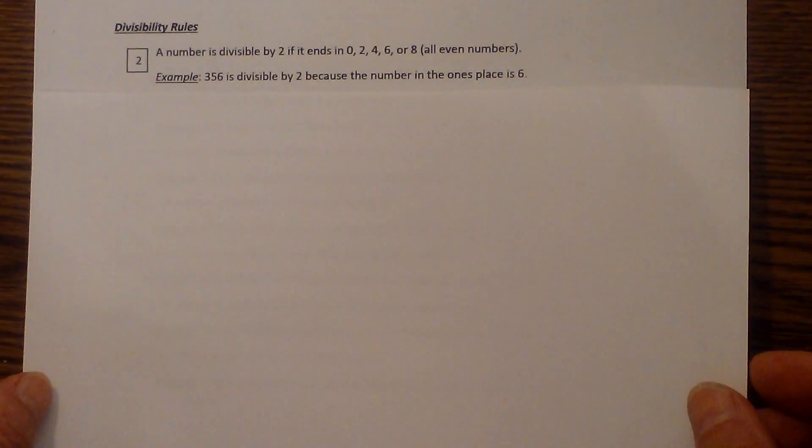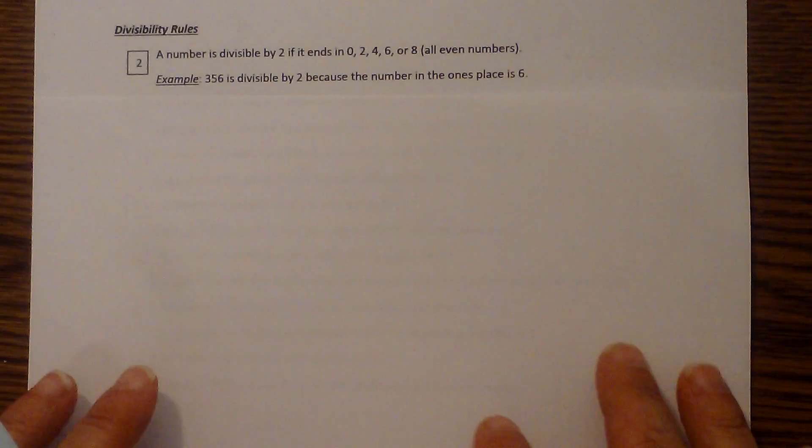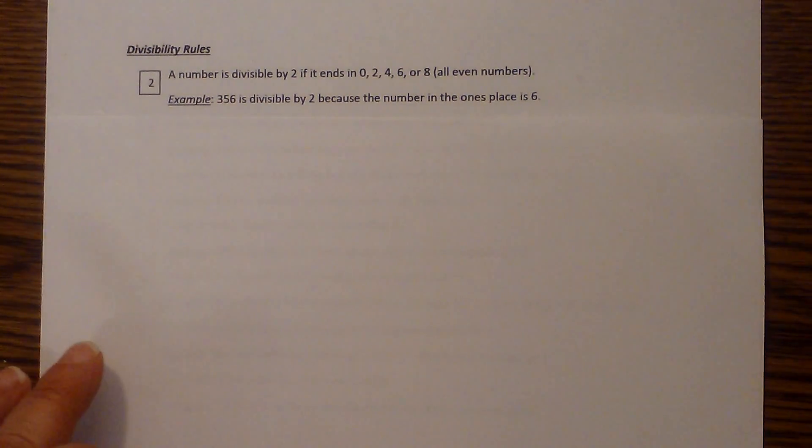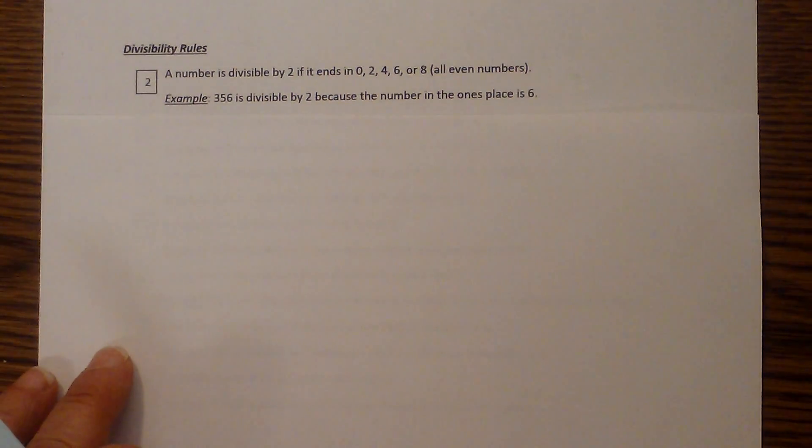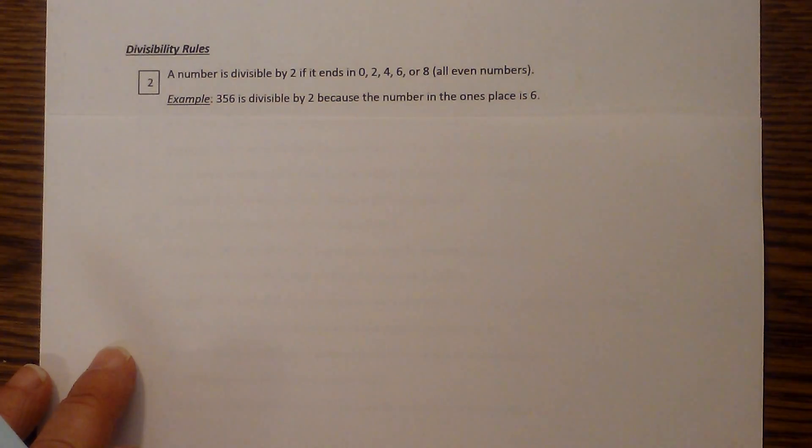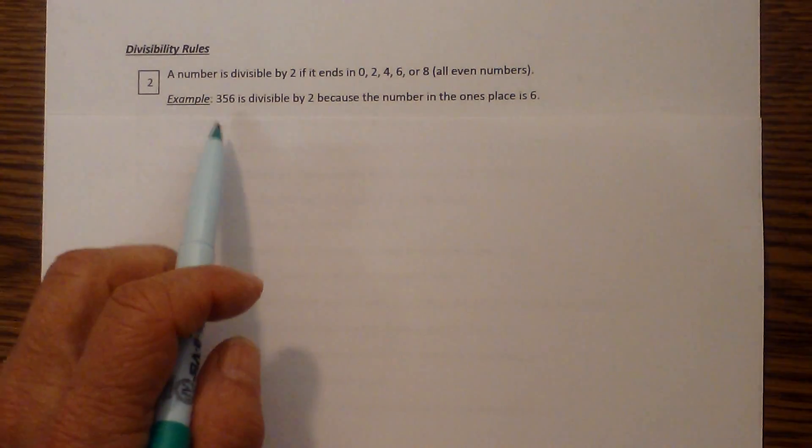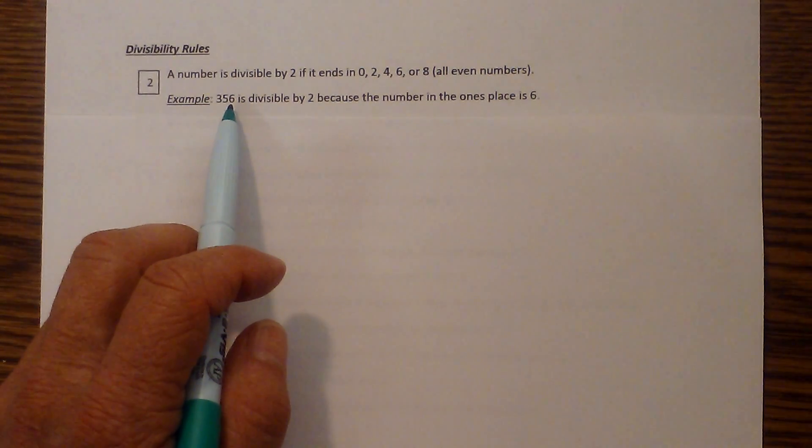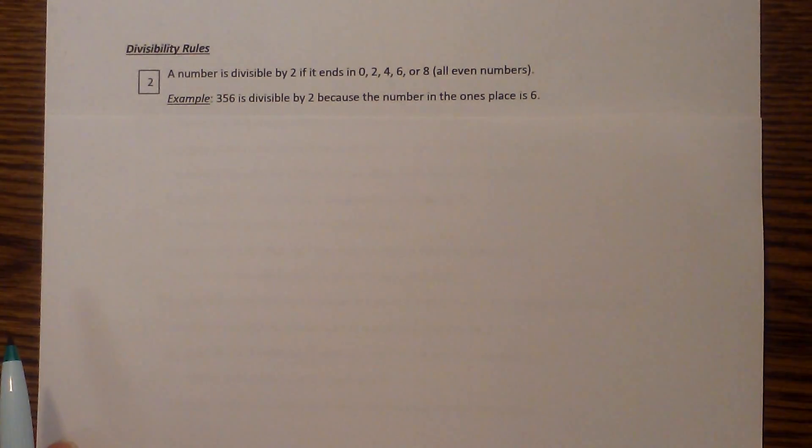Let's begin, and I'm going to cover up these so we don't get ahead of ourselves. A number is divisible by 2 if it ends in 0, 2, 4, 6, or 8 - in other words, all even numbers. For example, 356 ends in 6, so it will be divisible by 2.